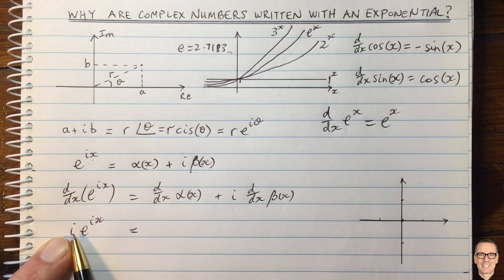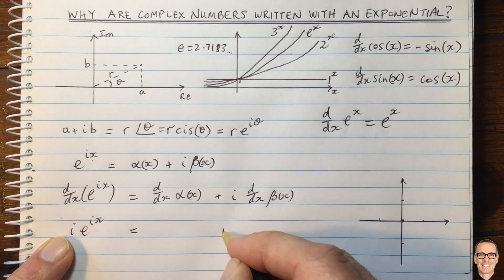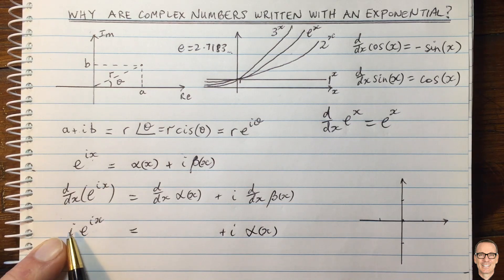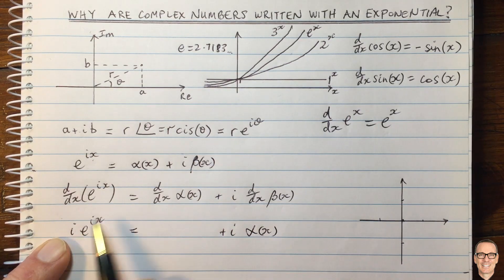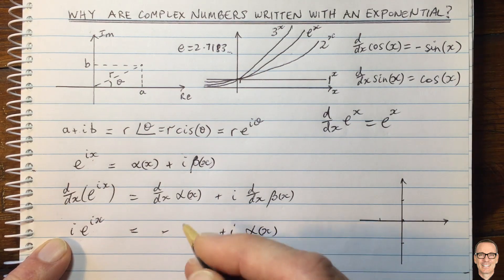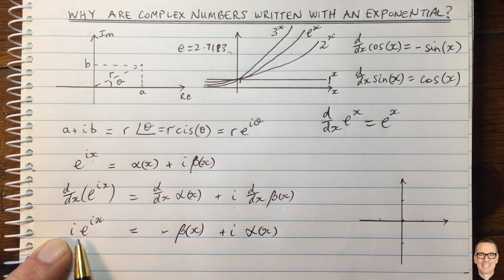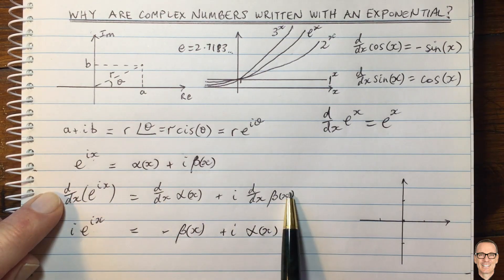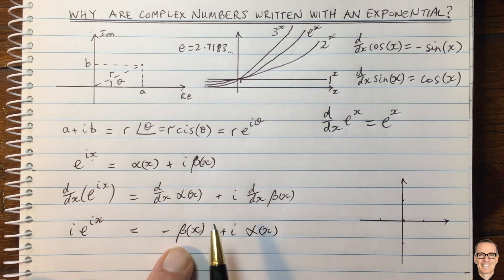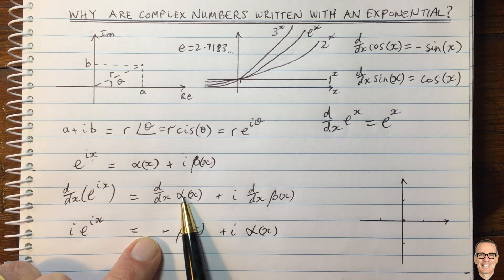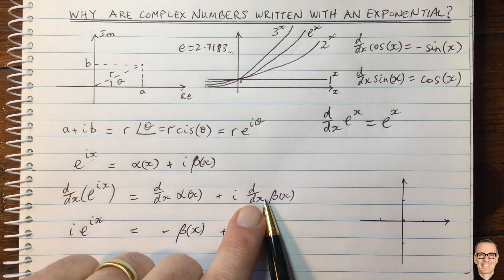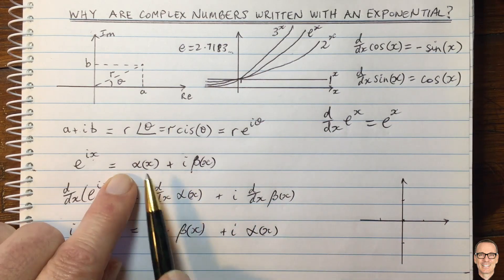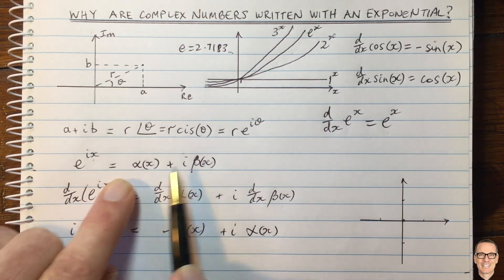Substituting in our definition, i times alpha plus i times beta gives us i·alpha(x) plus i²·beta(x). Since i squared equals negative one, we get i·alpha(x) minus beta(x). Equating real and imaginary parts gives us: the derivative of alpha equals negative beta, and the derivative of beta equals alpha.